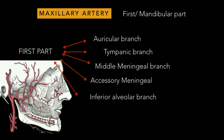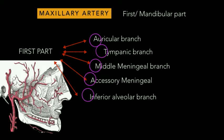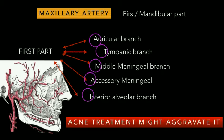The easy way to remember these branches is a mnemonic taken from the first letters: A from auricular, T from tympanic, M from middle meningeal, A from accessory meningeal, and I from inferior alveolar branch — making the mnemonic: 'Acne Treatment Might Aggravate It.'